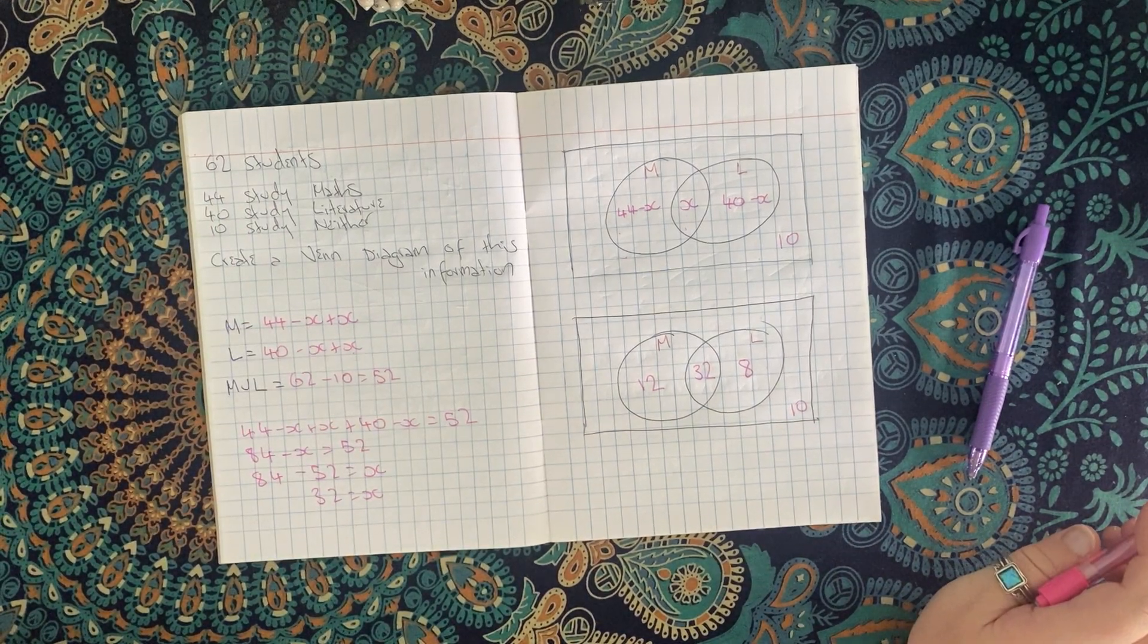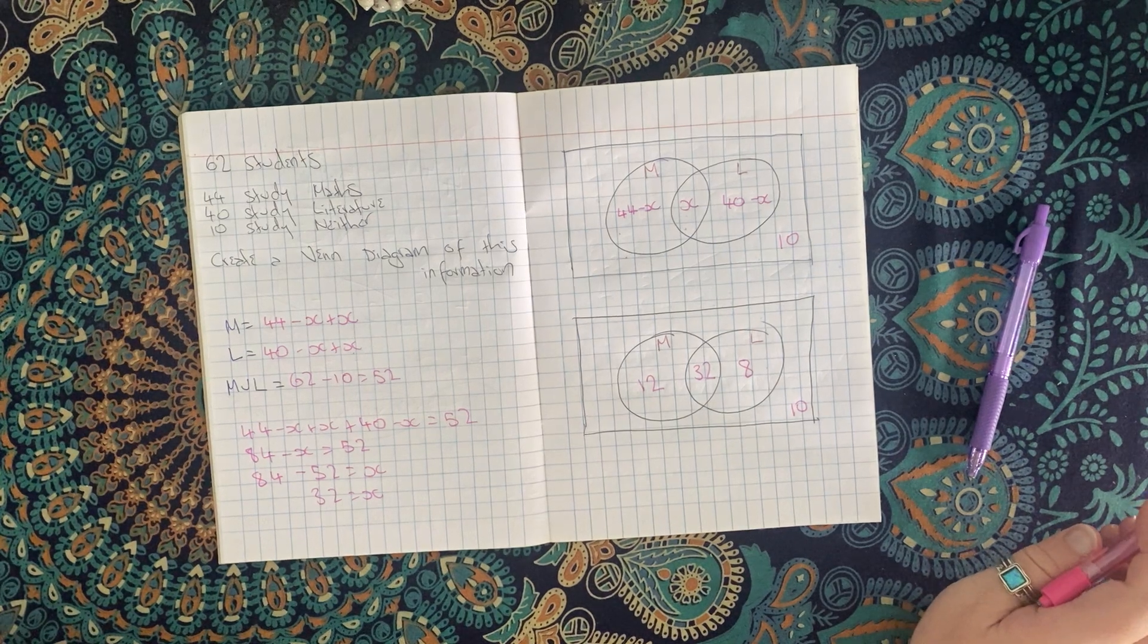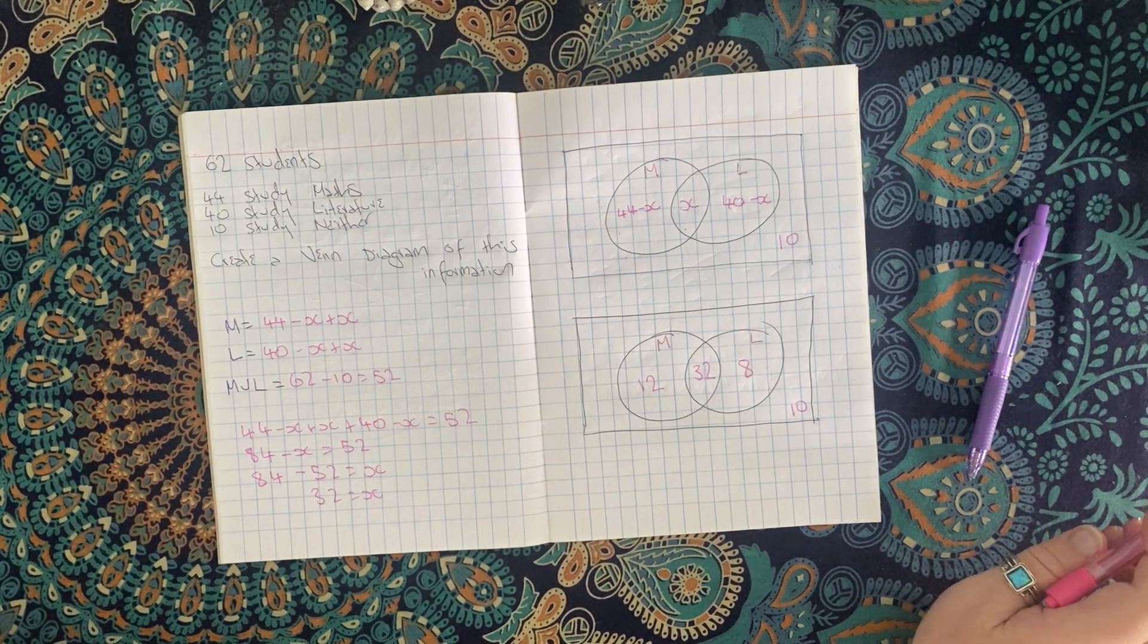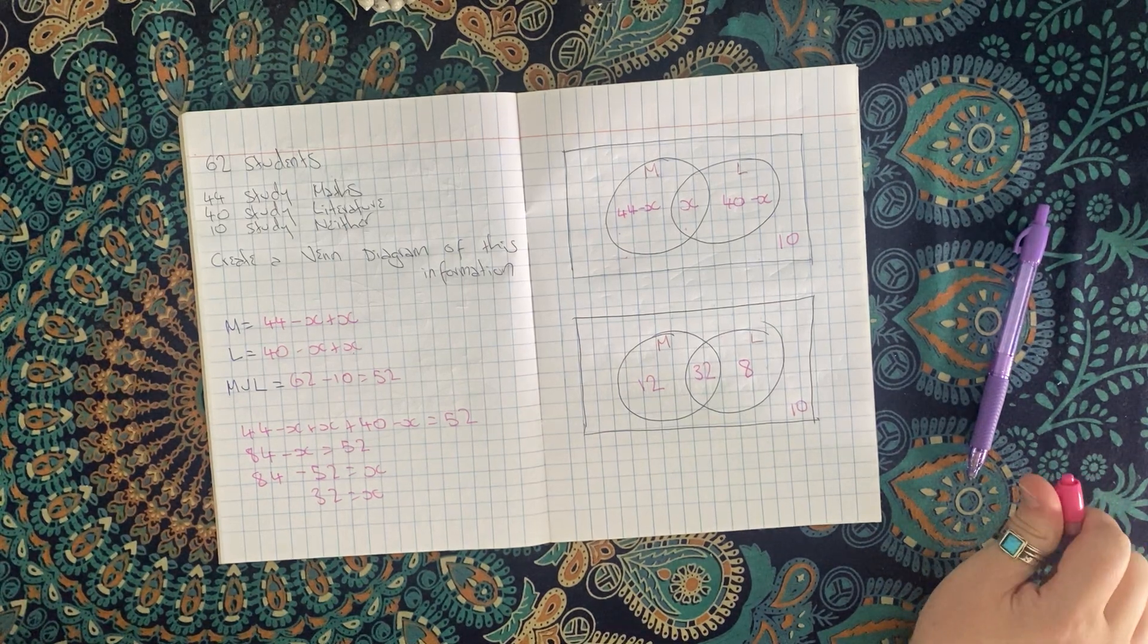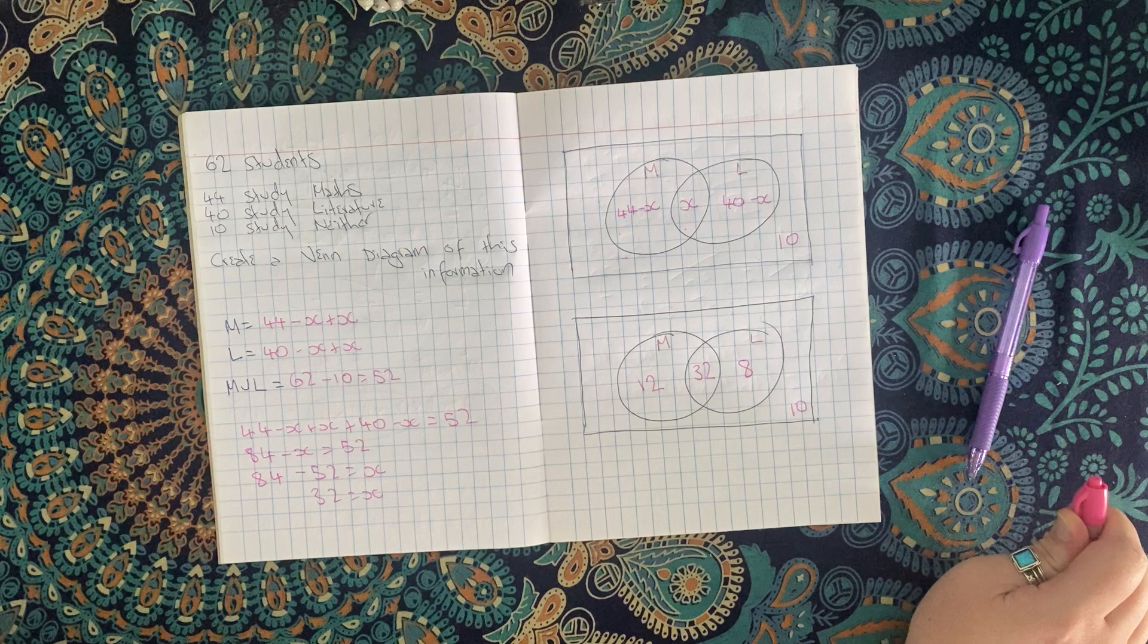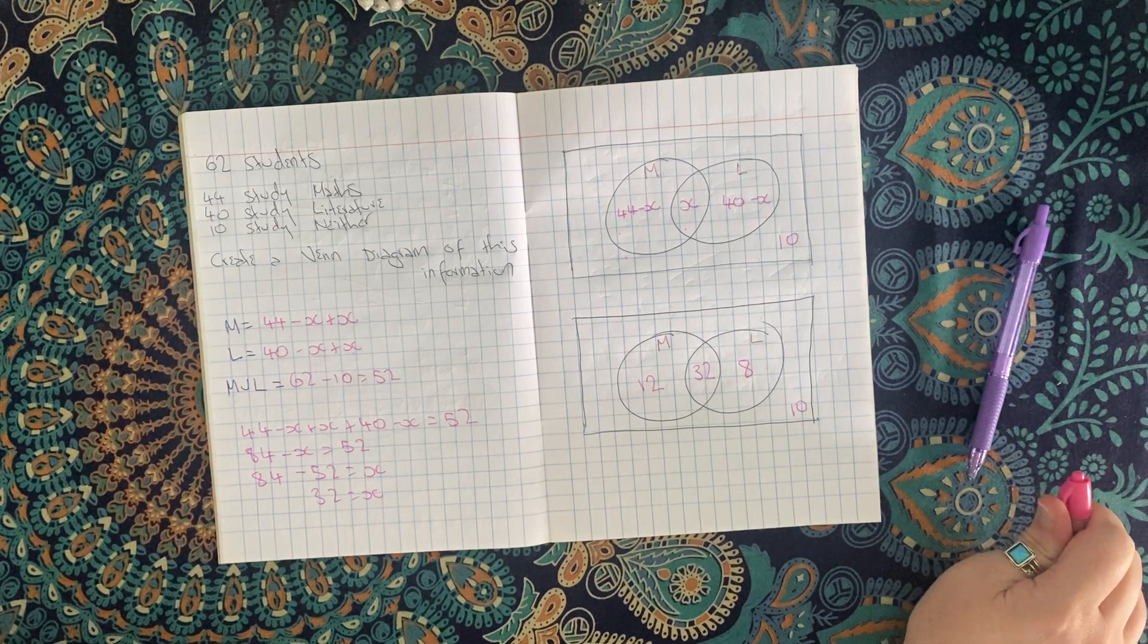So that's the algebraic way to find intersections when you're not given all the information. Make sure you drop me an email if you're still unclear about things or watch it again, and we'll try and figure it out. Good luck.